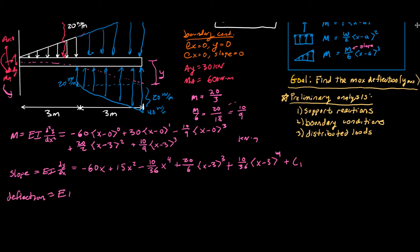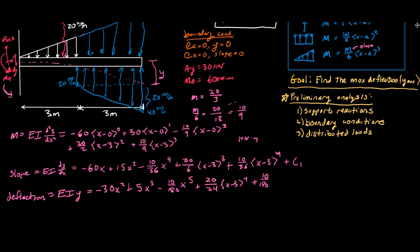Now we integrate one more time to find the deflection equation. That's EI times y. That's going to be negative 30x squared plus 5x cubed minus 10 over 180 times x to the fifth, plus 20 over 24 times ⟨x minus three⟩ to the fourth power, plus 10 over 180 times ⟨x minus three⟩ to the fifth. We integrate the constant to get plus C₁x plus C₂.